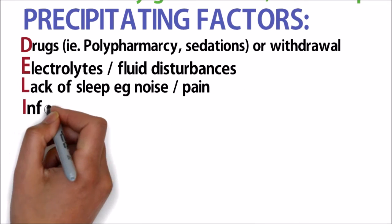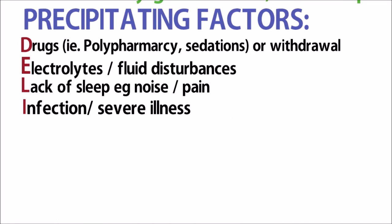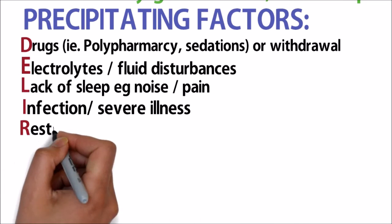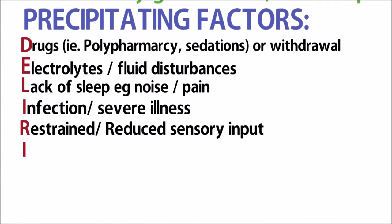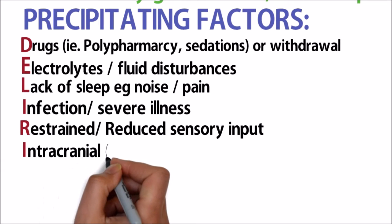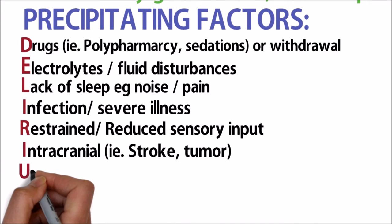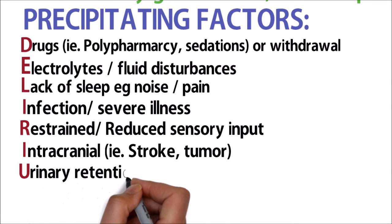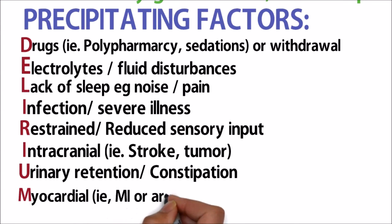Remember to provide adequate analgesia. I for any infection or severe illness. R is for restraint or reduced sensory input. The second I is for any form of intracranial abnormalities like stroke or tumor. U for urinary retention or constipation. And M is for anything to do with the myocardium, for example myocardial ischemia or arrhythmias.